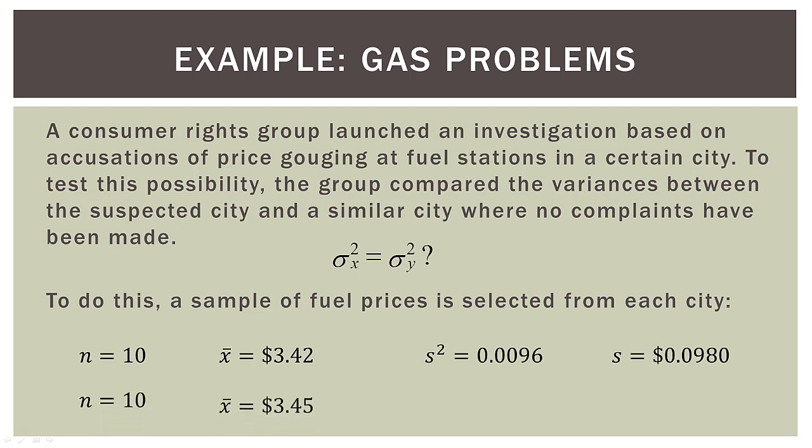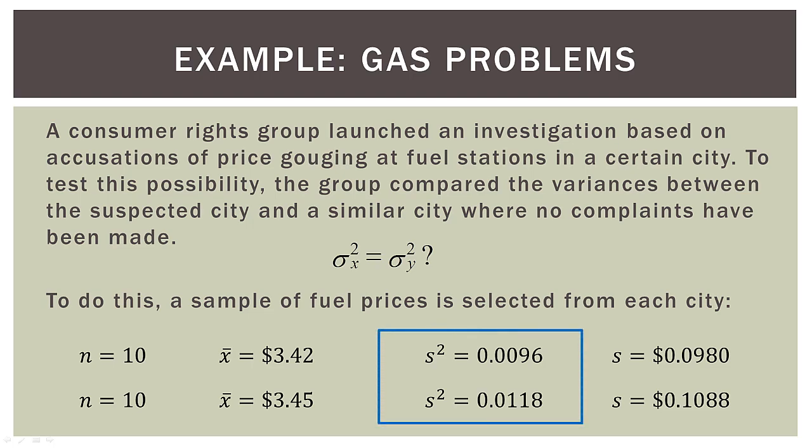For our second sample, it was also 10. Here the mean was $3.45. The sample variance was 0.0118, and the sample standard deviation was 0.1088 dollars, or about 10 or 11 cents. But of course, we're interested here in the sample variances.